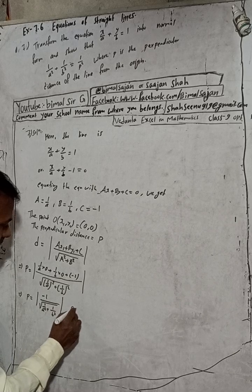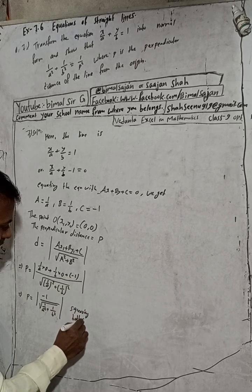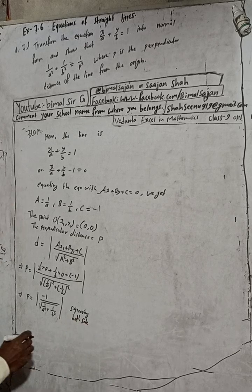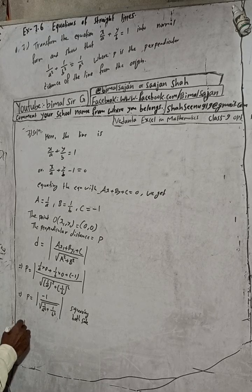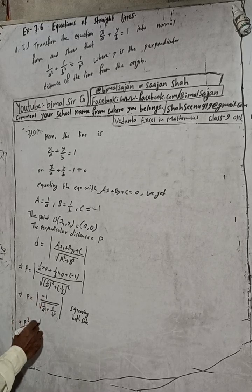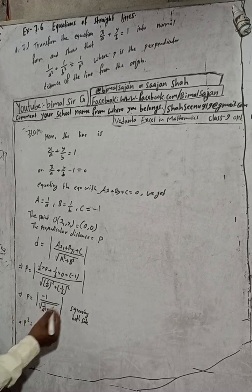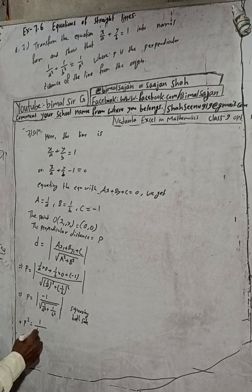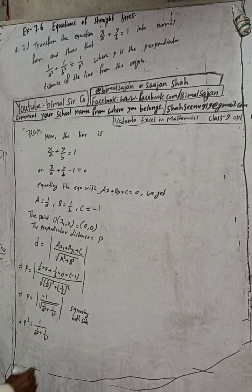Now squaring both sides, squaring both sides means this will be p² equals, so this minus 1 squared will be 1 by, and this square root squared, root square will be cancelled. This is 1/a² plus 1/b².